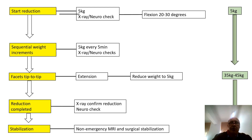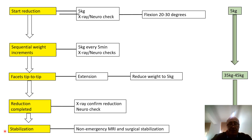Here's an overview of cervical traction: starting reduction at 5 kg with a neuro-check, flex to 20–30 degrees, start increasing weights 5 kg every 5 minutes with a neuro-check each time, targeting 35–45 kg. When facets are tip-to-tip, extend the neck and drop to maintenance weight — the neck is reduced. Once complete, do a check x-ray and final neuro-check. The patient is then ready for surgery — you've decompressed the canal, so it doesn't have to be emergency surgery; it can be at the next available list. The patient can go for MRI and surgical stabilisation as an urgent but not emergency case.